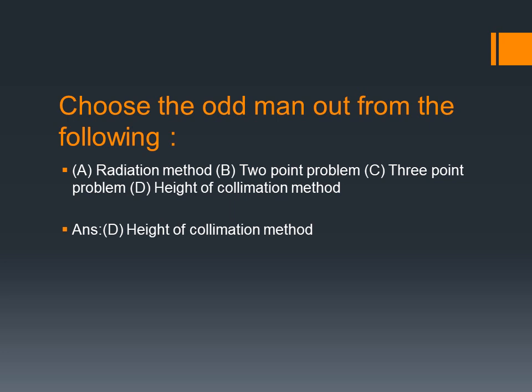Height of collimation method is related to leveling. The leveling methods are height of collimation method and rise and fall method. Plane table survey methods are radiation method, 2-point problem, and 3-point problem. So height of collimation method is the odd one out.